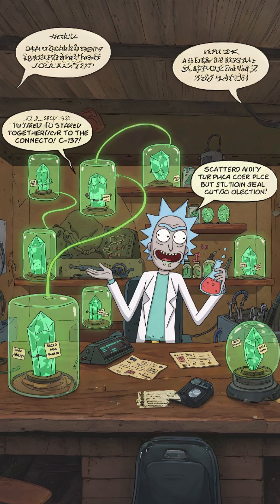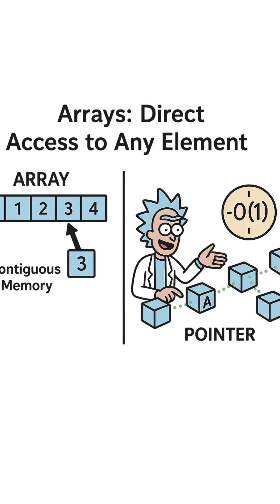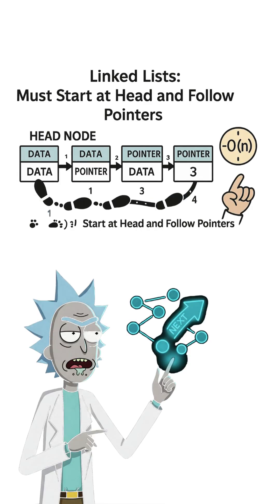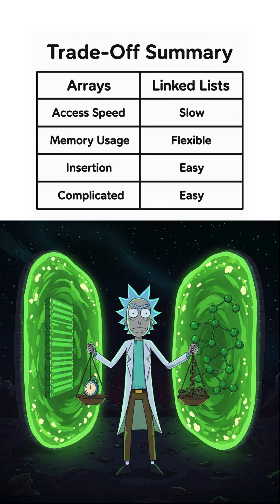It's like my collection of crystals from Dimension C-137 — they don't need to be stored together to be connected. The trade-off is you can't just jump to any position like in an array. You gotta traverse the list one by one, starting from the head. It's a classic space-time trade-off — sometimes you gotta sacrifice instant access for flexibility.